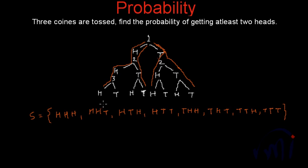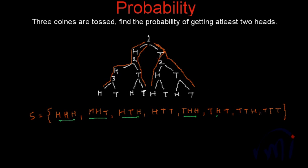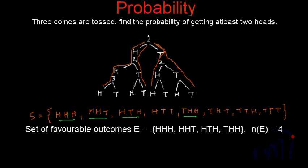We want to find the probability of getting at least 2 heads. Let me identify all events with at least 2 heads: HHH has 3 heads — counted; HHT has 2 heads — counted; HTH has 2 heads — counted; HTT has only 1 head — not counted; THH has 2 heads — counted. After that we have either 1 head or no heads. So the total events with at least 2 heads are 4.